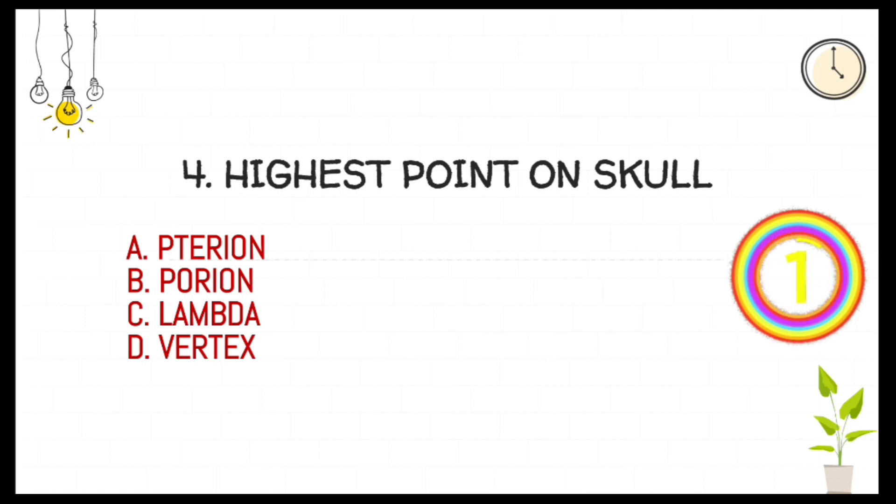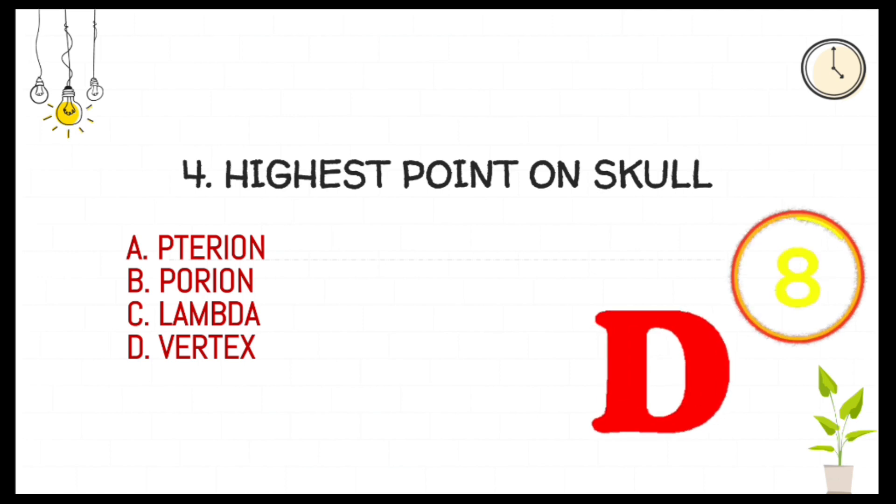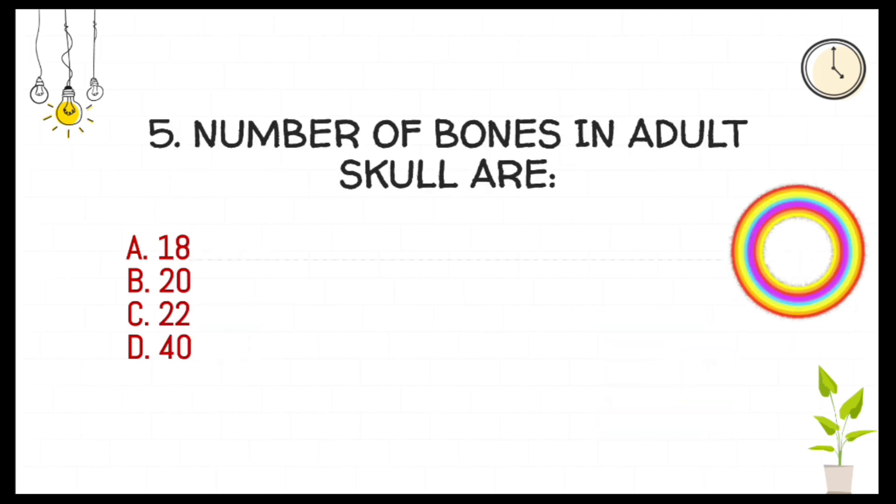This has again been discussed, and if you remember the picture, answering will be easy. The answer for the question is option D: vertex. Fifth one: number of bones in adult skull are?